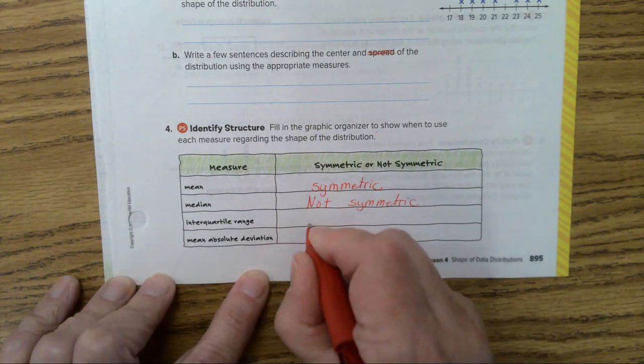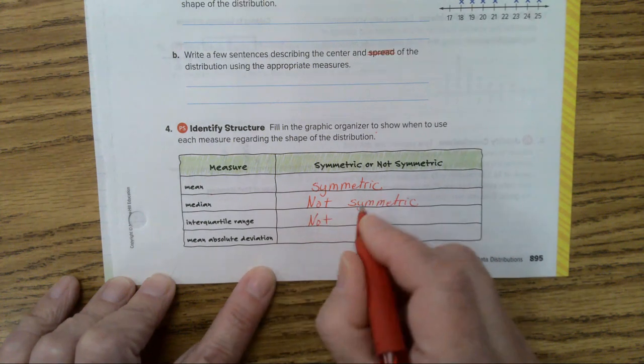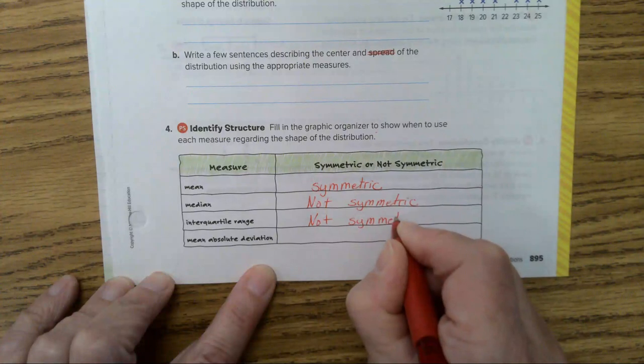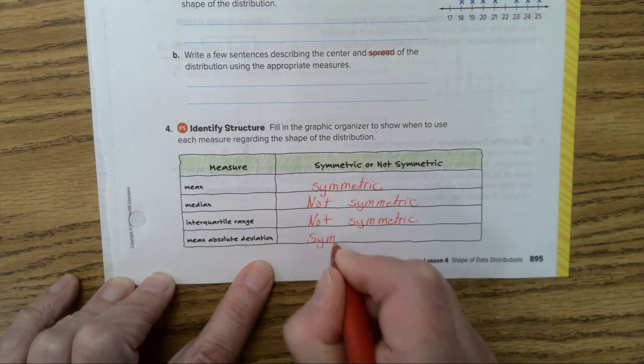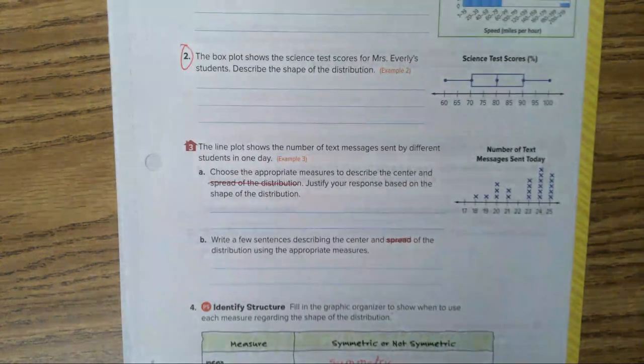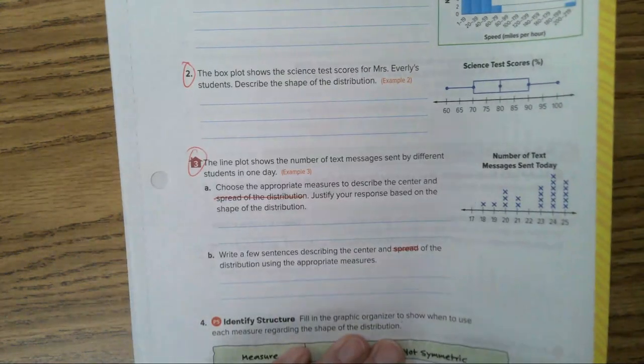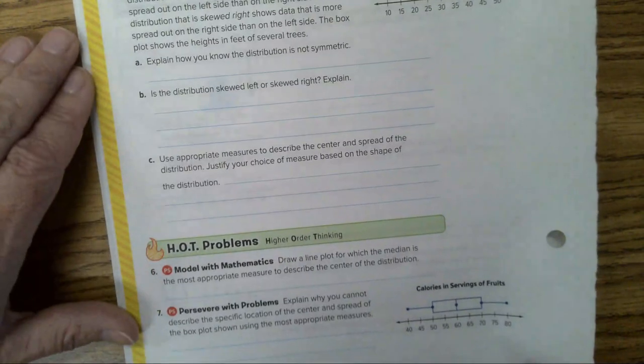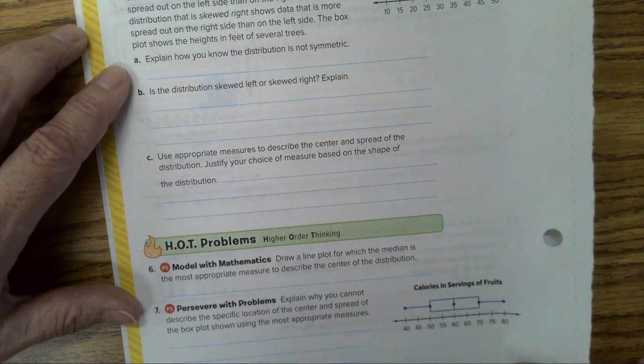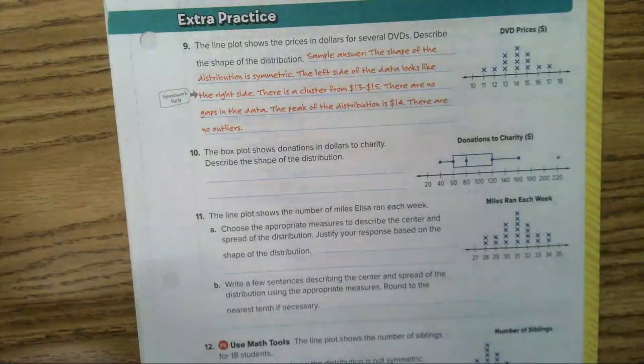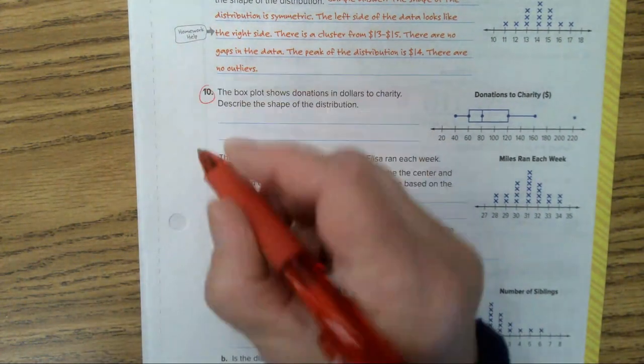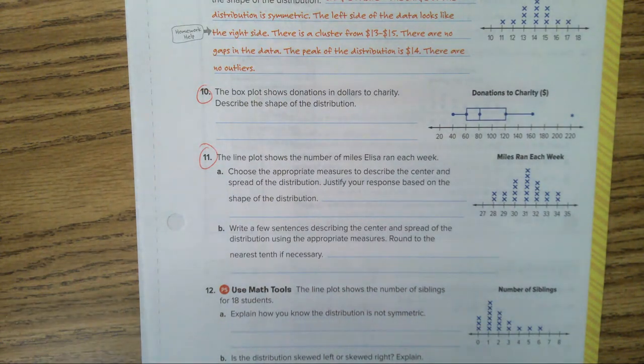Interquartile range, you use when it's not symmetric. And you use the mean absolute deviation when it is symmetric. So you're going to do one, two, and three. On the next page, number five is pretty easy. And that'll be enough. If you have extra time, you can go ahead and do 10 and 11 on the other page. But I think that should keep you busy. And I will go around if you have any questions. We're good to talk.